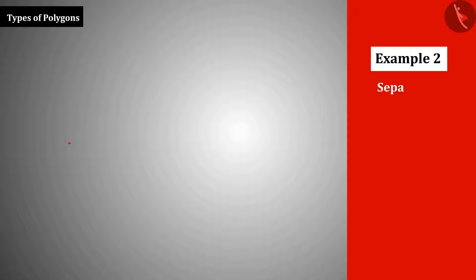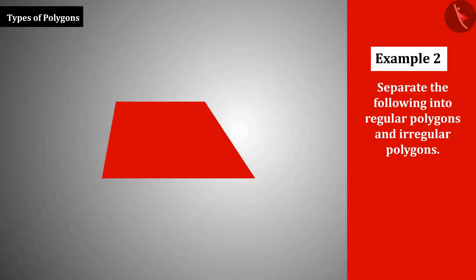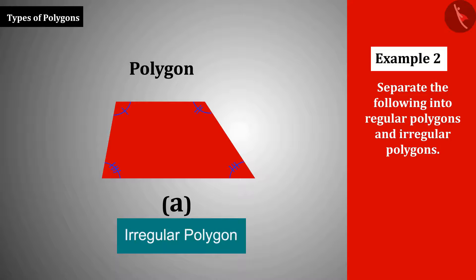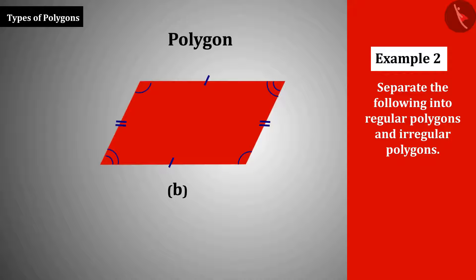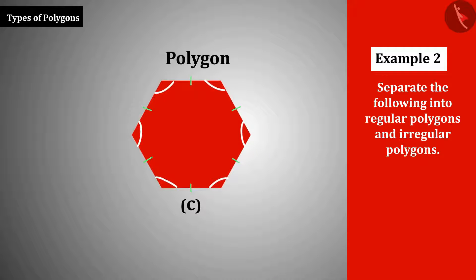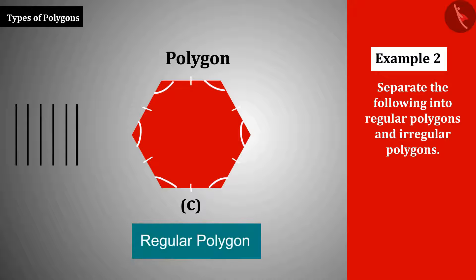Example 2: Separate the following into regular polygons and irregular polygons. In polygon A, the measurement of the sides are not the same. A polygon whose sides or angles are not all equal is an irregular polygon. Similarly, polygon B is also irregular. In polygon C, marks on all sides indicate equal sides and equal angles, so it is a regular polygon.